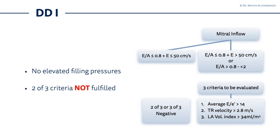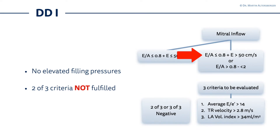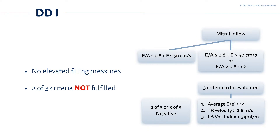In this case you have several situations. First of all, if two of the three criteria we discussed before — the average E to E' above 14, the TR velocity above 2.8 meters per second, and the left atrial volume index above 34 milliliters per square meter — are not fulfilled, it means you do have diastolic dysfunction grade 1. We then move to the E to A ratio of the mitral valve inflow: an E to A ratio above 0.8 and below 2. Remember, above 2 means restrictive filling pattern, i.e., diastolic dysfunction grade 3. Or we have an E to A ratio at or below 0.8 plus a maximal E velocity of 50 centimeters per second. If those three criteria are not fulfilled, you have diastolic dysfunction grade 1.